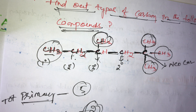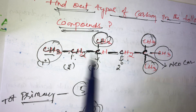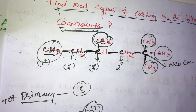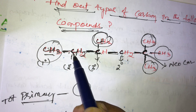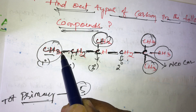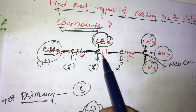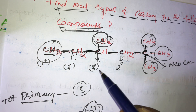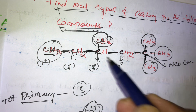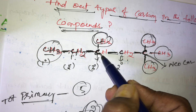Neo carbon means when a carbon is bonded with four other carbons. Primary carbon means when a carbon is bonded with only one other carbon. Secondary means when a carbon is bonded with two other carbons. Tertiary carbon means when a carbon is bonded with three other carbons — only one tertiary carbon is present.